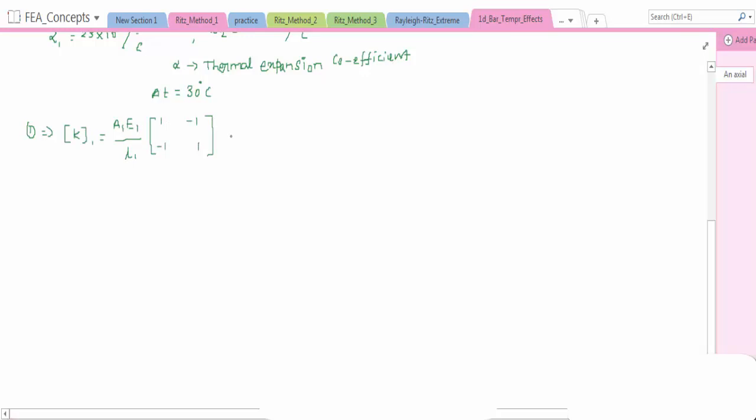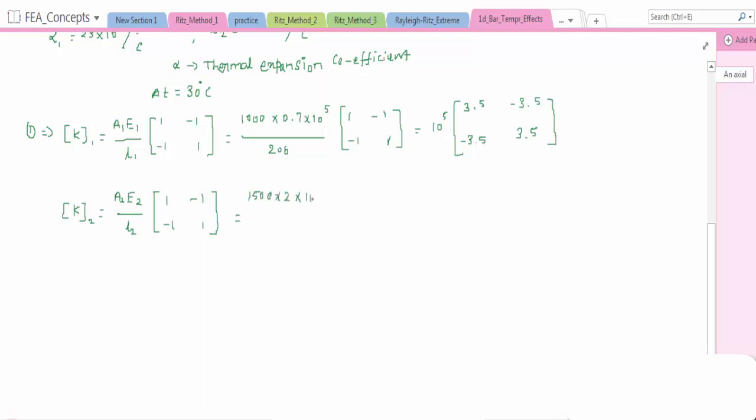K is A1 E1 by L1 [1 -1; -1 1]. Substitute the corresponding values and you will get, let me keep it as the constant 10^5 and we will take inside the 3.5. This is for element 1. And here element 2, A2 E2 by L2 [1 -1; -1 1]. 1500 into 2 into 10^5 divided by 300, so 10 into 10^5, 10^5 we are keeping constant and 10 we can take it inside.